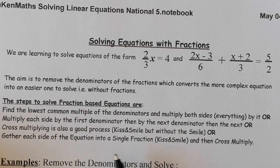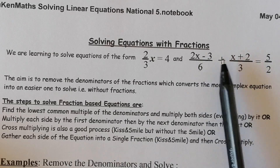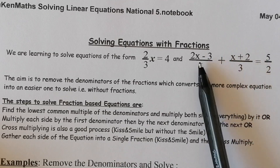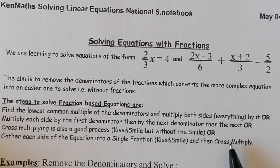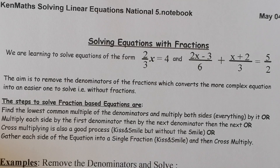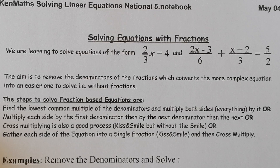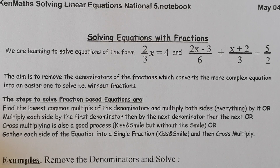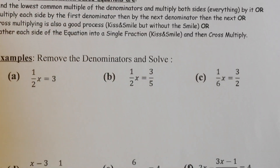Another way, if we have fractions on both sides, is to gather two fractions together as a single fraction, and then do either cross multiplying or multiplying by the denominators. But what I'm going to be doing today is just removing the denominators and solving from there. Let's go to our first examples.